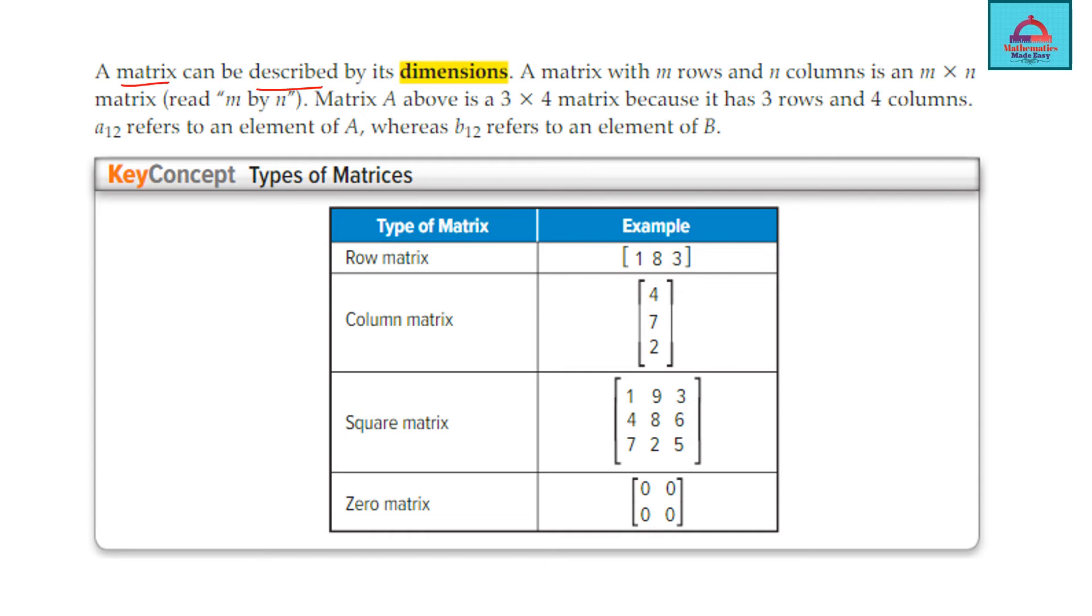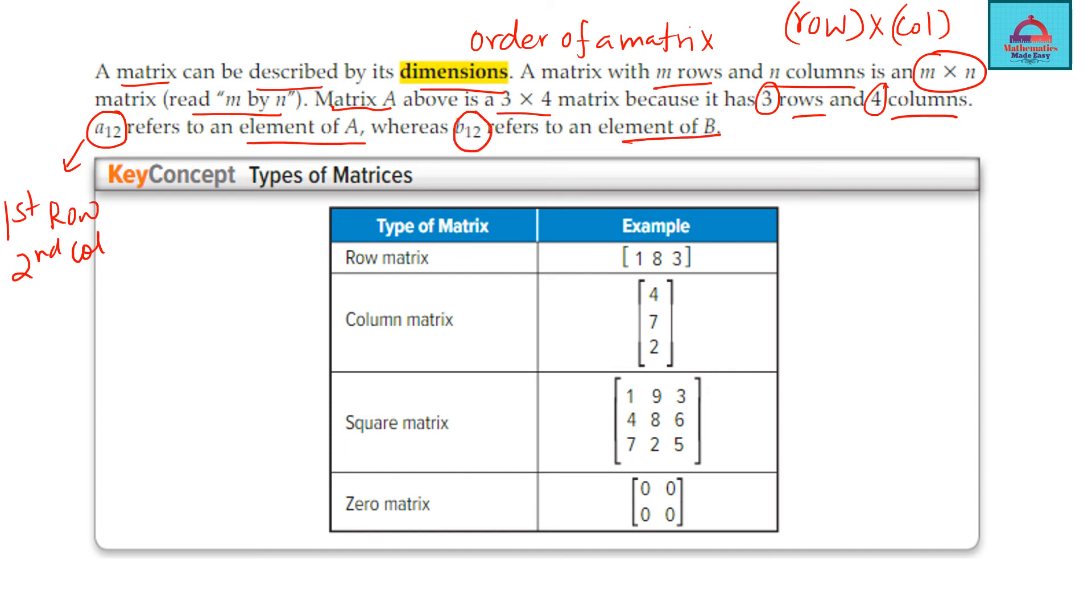Let's go on further and describe the dimension. Dimension or order of a matrix are two different names for the same thing. So if a matrix has M rows and n columns, its order or dimension is M by n or M cross n. Both is good. So if I have a matrix A which is 3 cross 4, means it has 3 rows, 4 columns. When we are writing the order or the dimension, remember the order is first the row, then the column. If I have A 1, 2, it means it is referring to the element of the matrix A which is at first row and second column position. Similarly, B 1, 2 refers to the element of matrix B at the same position that is first row and second column.